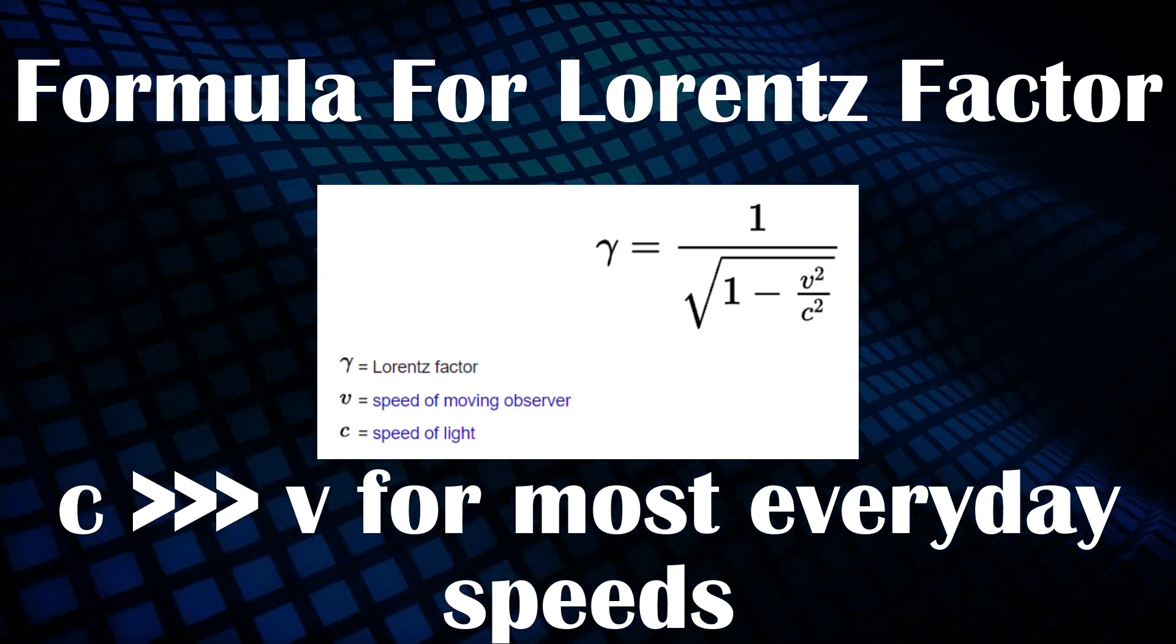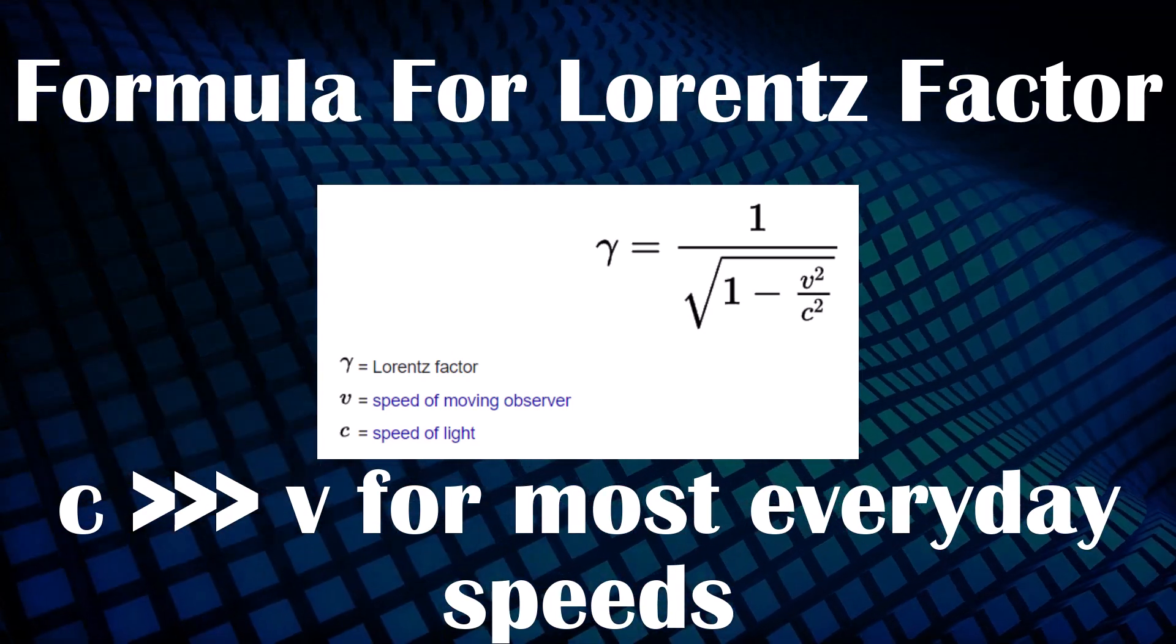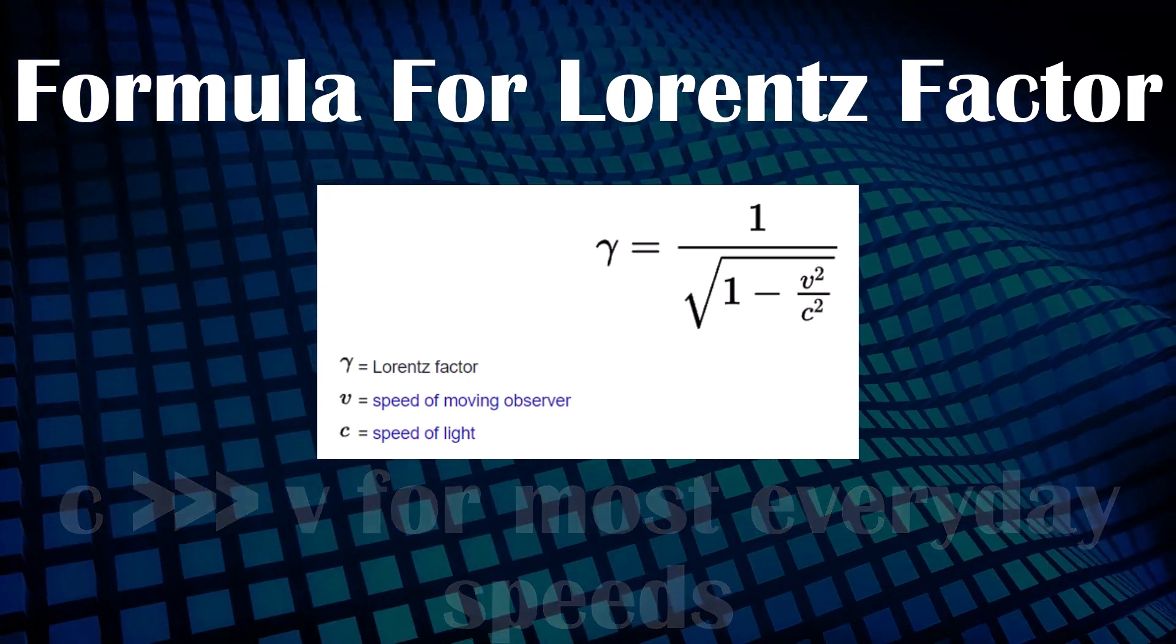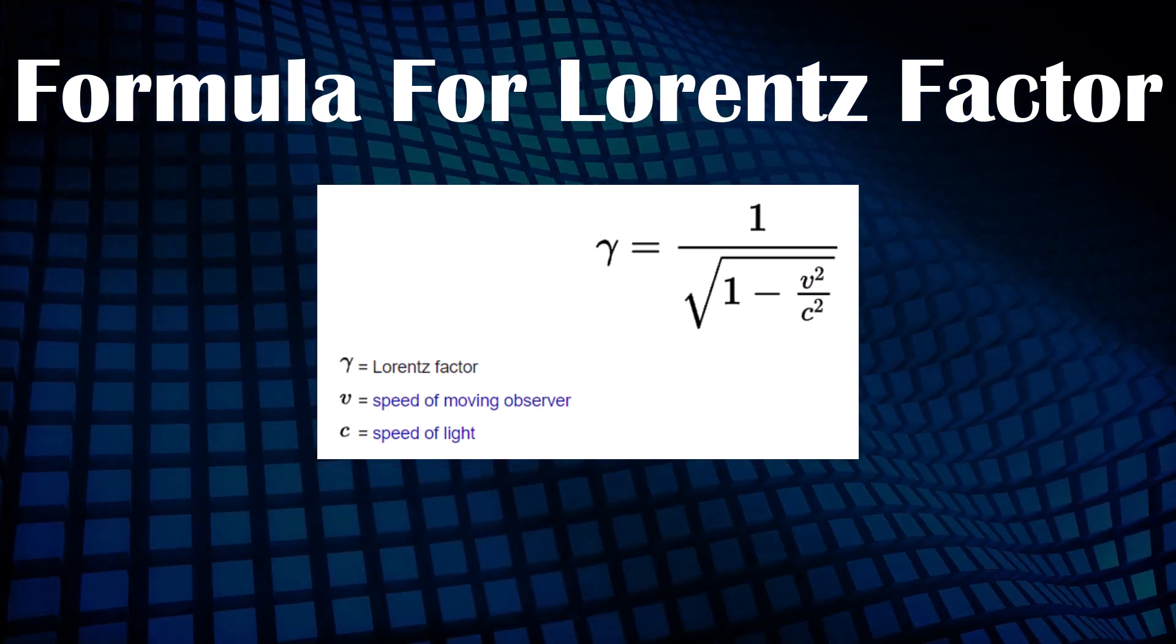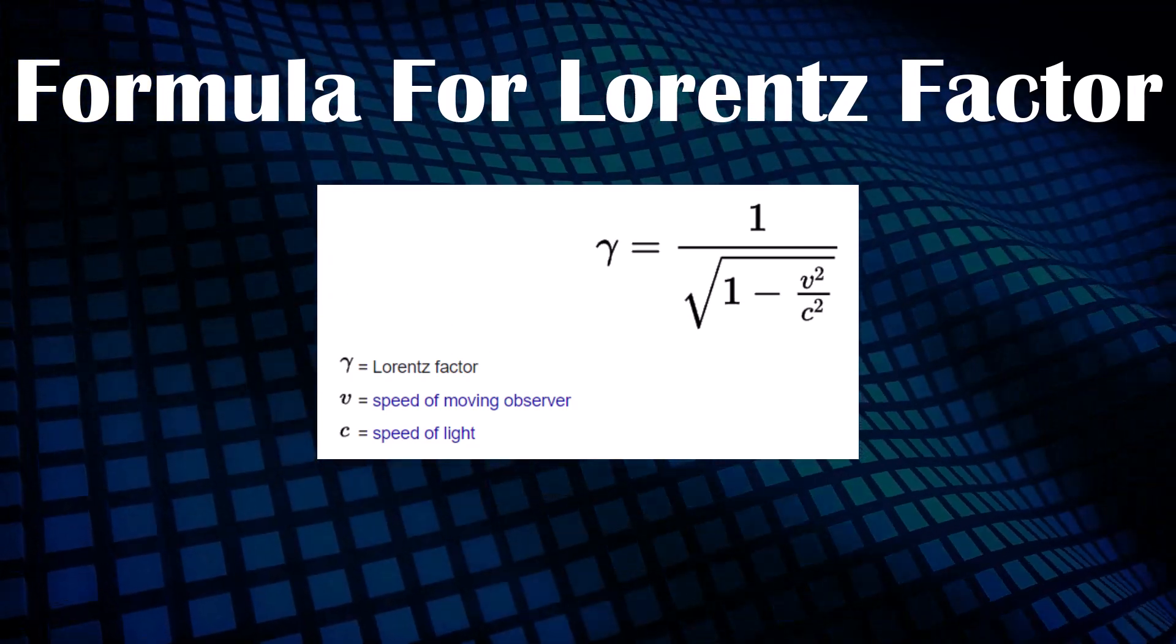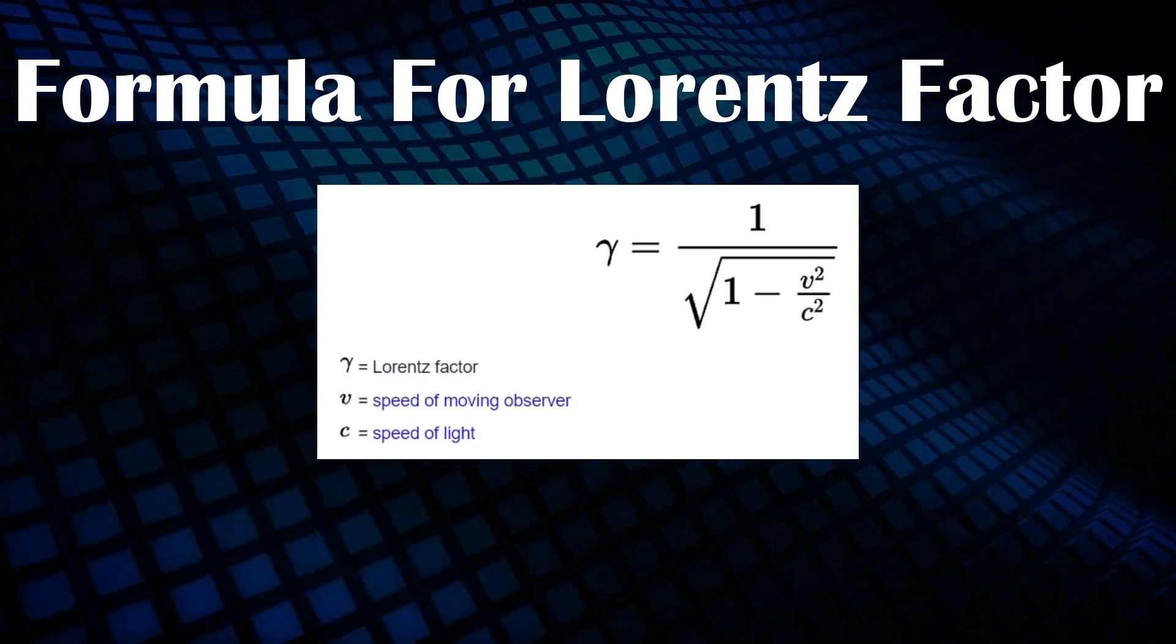Light is so fast that it takes seconds for it to reach the Moon from Earth, and only minutes to reach the Sun. However, if you were to substitute in a speed for v which was slightly lower than c, one of a similar magnitude, you'd see that gamma increases noticeably from one.